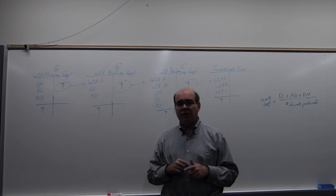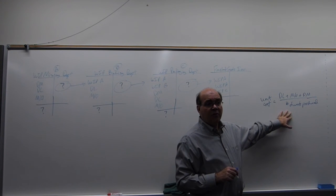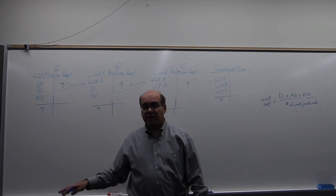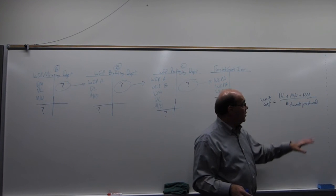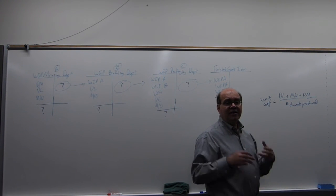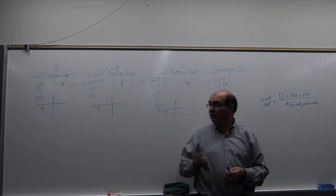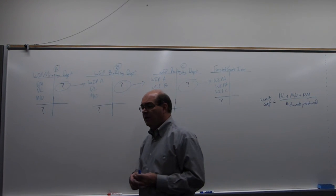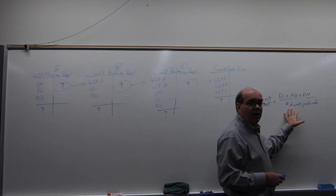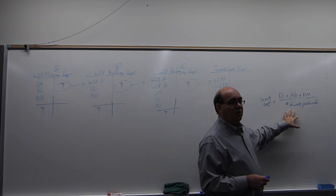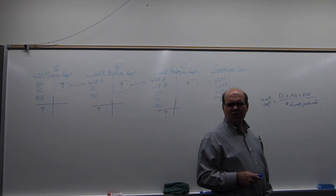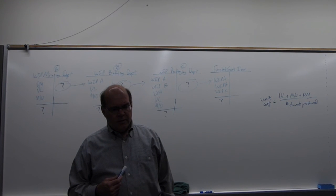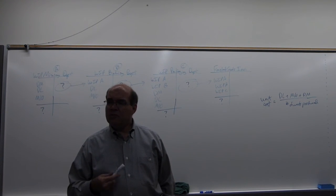One thing that's different from job order costing: we used the same unit cost formula before, but here the assembly line just keeps running. We never finish a job — we just keep cranking out waffles. So we need something called equivalent units, because we can work on things and not be completely done but have done part of the work.